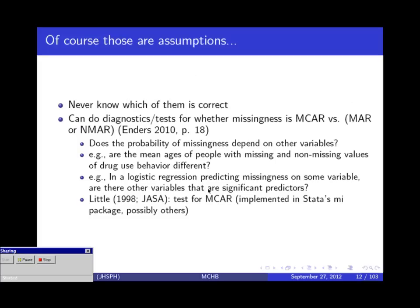Most of the time we proceed assuming missing at random, but these are assumptions — we never actually know which missing data mechanism is correct. There are formal tests to see whether missingness is MCAR — essentially you check whether people with missing versus observed values differ on any other characteristics. But honestly, most of the time you don't have MCAR, so these tests 99% of the time will say no, it's not missing completely at random. You then move forward and do a weighting or imputation. We can rule out MCAR, but we never know for sure if it's MAR or MNAR — you have to use substantive understanding of what led to the missing data.